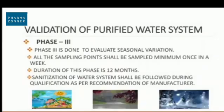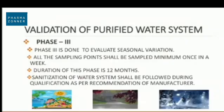Phase Three is done to evaluate seasonal variation. When seasons change, source water quality changes, and the impact on final water quality is evaluated. The duration of Phase Three is 12 months. All sampling points shall be covered minimum once per week, and critical points such as generation point, storage point, and return loop point can be analyzed on a daily basis. After 12 months, trends are compiled and a final report is prepared.